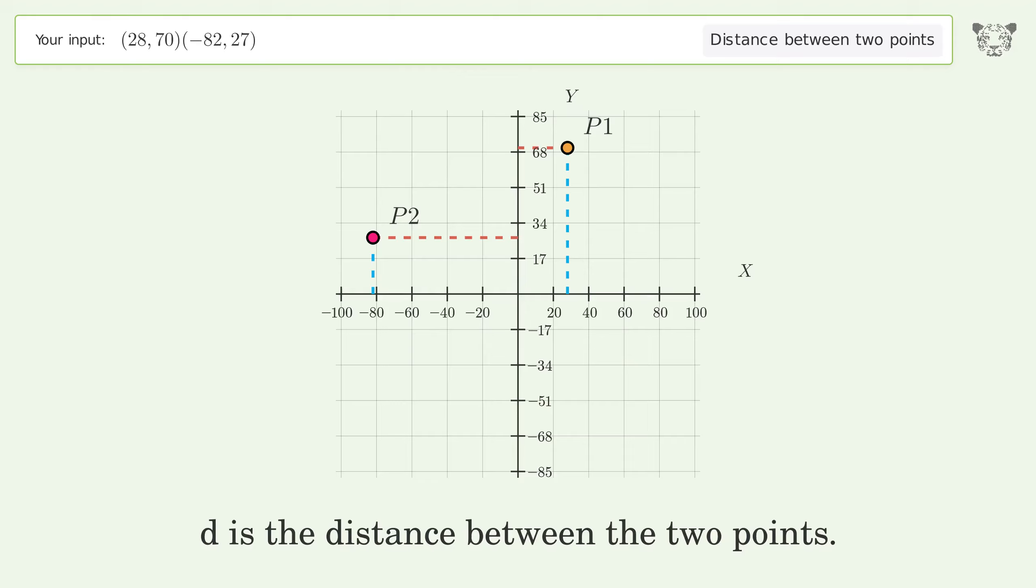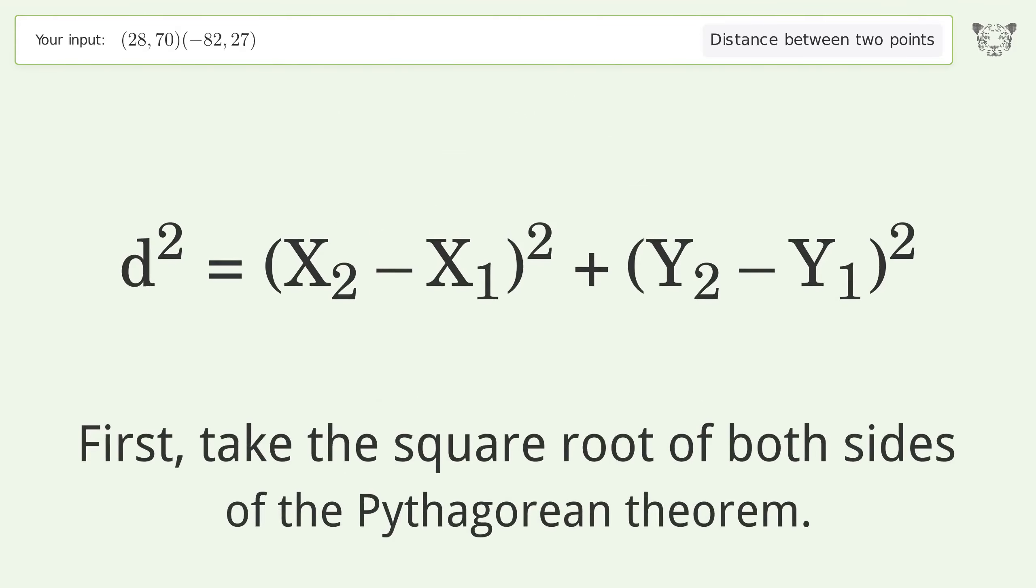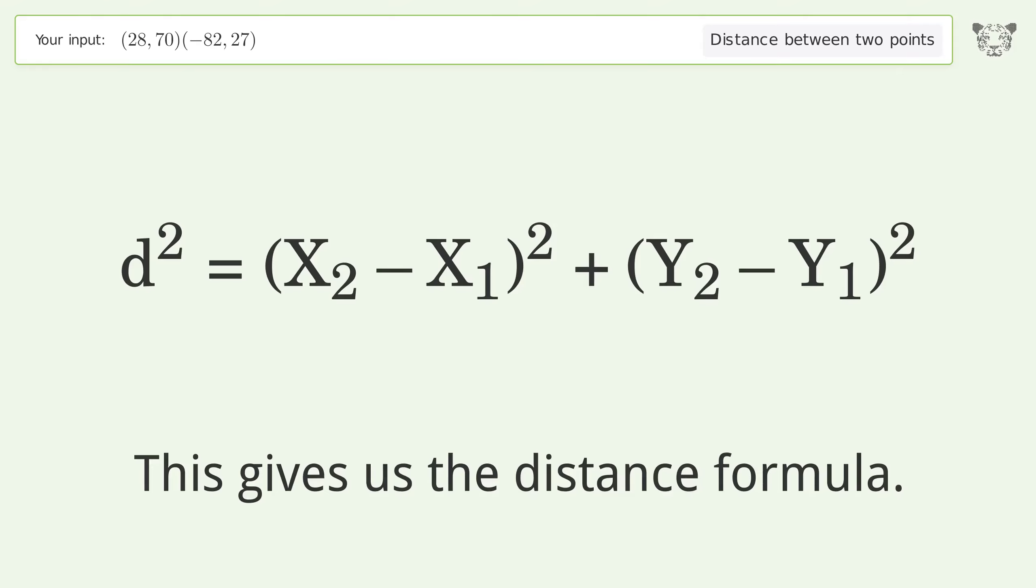d is the distance between the two points. First, take the square root of both sides of the Pythagorean theorem. This gives us the distance formula.